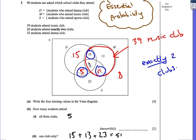All three clubs? That's the bit in the middle, so there's 5 students that attend all three clubs, there we go, that's 5. Only one club? Well, who attends only one club? This group here, so it's 15 of them just have drama, 13 of these just attend music, and 23 of these just attend sport. Add them together, we get 51.